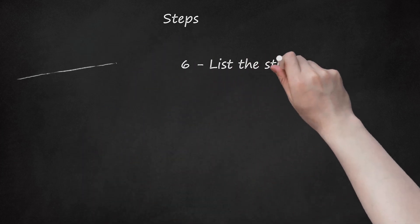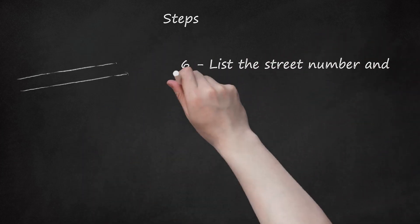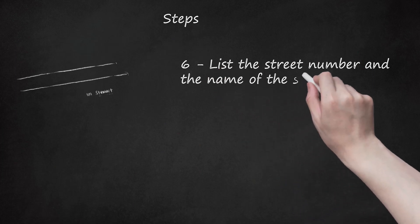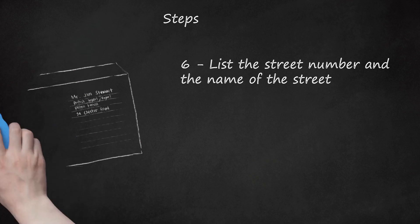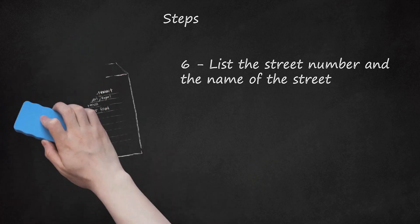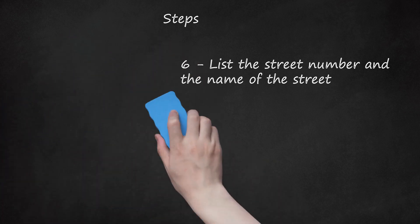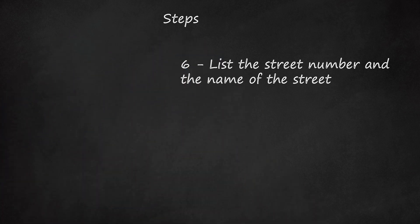Step 6. List the street number and the name of the street. Write down the street number of the building you are sending the letter to, as well as the street name. To our example address, you would now add: Mr. Jim Stewart, British Imports, Exports, Pilton House, 34 Chester Road.